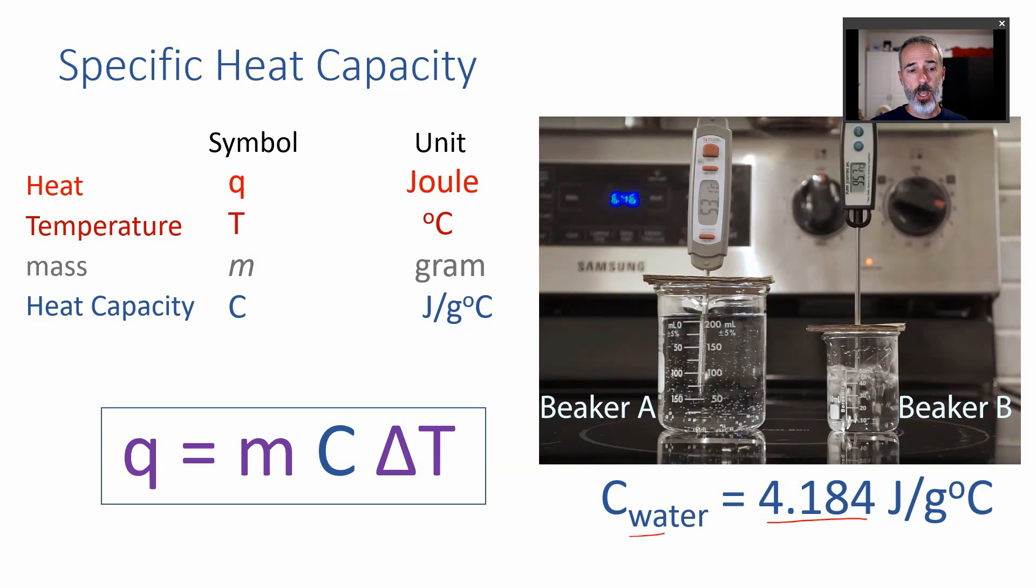So we're going to practice some calculations with this but I want to bring up one thing which you may run into here which is this. The heat capacity here you can see that I'm using C for that abbreviation. Occasionally you will see S used there. In this formula occasionally you'll see S. AP always uses C. Now there's a reason for it.